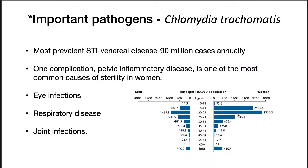One important pathogen is Chlamydia trachomatis, which causes one of the most prevalent sexually transmitted infections in the US. There are 90 million cases annually. One complication, pelvic inflammatory disease, is one of the most common causes of sterility in women. The bacterium can also cause eye infections, respiratory disease, and joint infections.